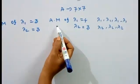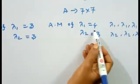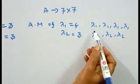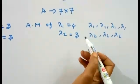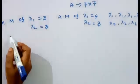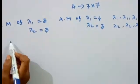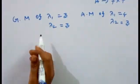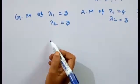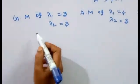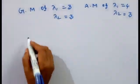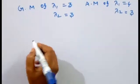We assume algebraic multiplicity of λ1 is equal to 4 and λ2 is equal to 3, which gives us 4 plus 3 equals 7 — matching our 7×7 matrix. In the Jordan canonical form, the geometric multiplicity and algebraic multiplicity are used to determine the Jordan blocks.